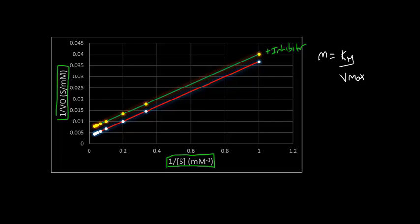However, what we also notice here is that our y-intercept changes. So our y-intercept with the inhibitor is at about 0.0075, and our y-intercept without the inhibitor is around 0.003. So we have an increase in the y-intercept with an inhibitor around. Remember, the y-intercept is 1 over Vmax.